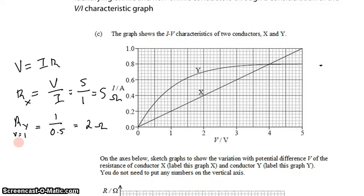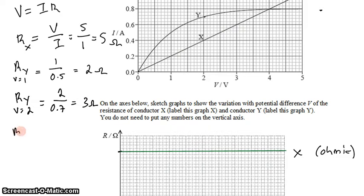We'll see what it actually reaches. Let's look at component Y when the voltage is 2. So that's 2 volts divided by 0.7 amps, and that's about 3 ohms.